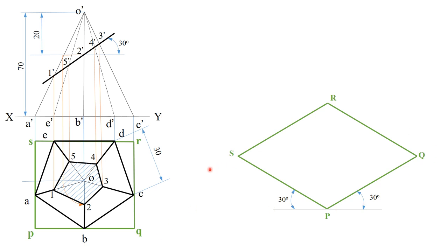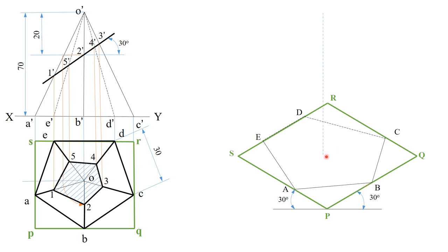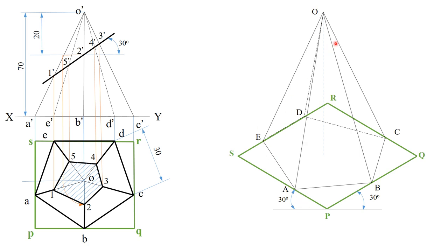Complete the isometric box PQRS. Along the box, transfer all the base points with the same length ratio — point A is between P and S, point B is between P and Q, and so on. Draw the base accordingly. Then plot the center of the base and mark the axis height of 70 mm vertically to get the apex point O. Connect all base points to the apex O.